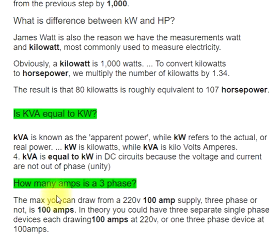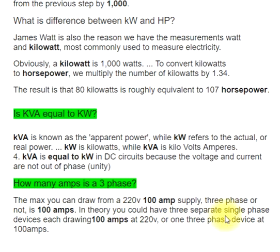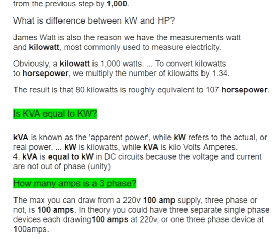How many amps is a three-phase? The maximum you can draw from a 220V 100-amp supply, three-phase or not, is 100 amps. In theory you could have three separate single-phase devices each drawing 100 amps at 220V, or one three-phase device at 100 amps.